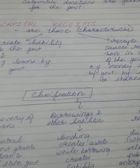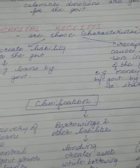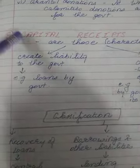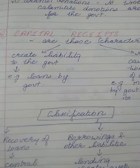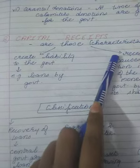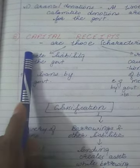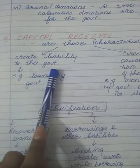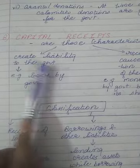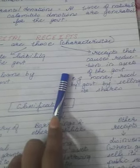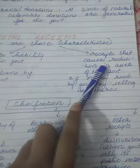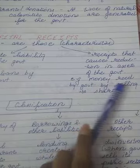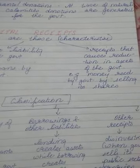Now we will move on to capital receipts. We have completed our tax and non-tax receipts, and thus completed our revenue receipts. Now we will move on to capital receipts. Capital receipts are those receipts which have characteristics like creating liability to the government, or receipts that cause a reduction in assets of the government — for example, money received by the government by selling its shares.